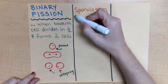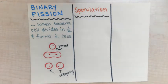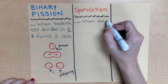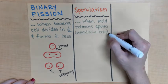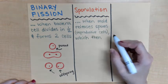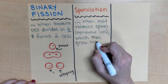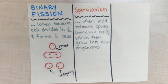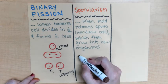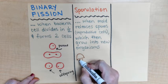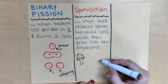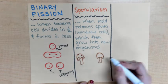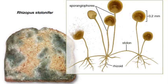A second form of asexual reproduction is what we call sporulation. This is when mold releases types of spores, and these spores are known as the reproductive cells. When these are released out in the air, they eventually will grow into new organisms.